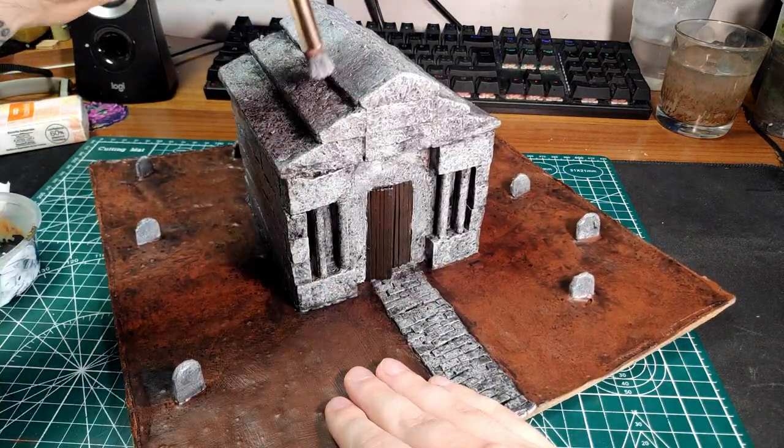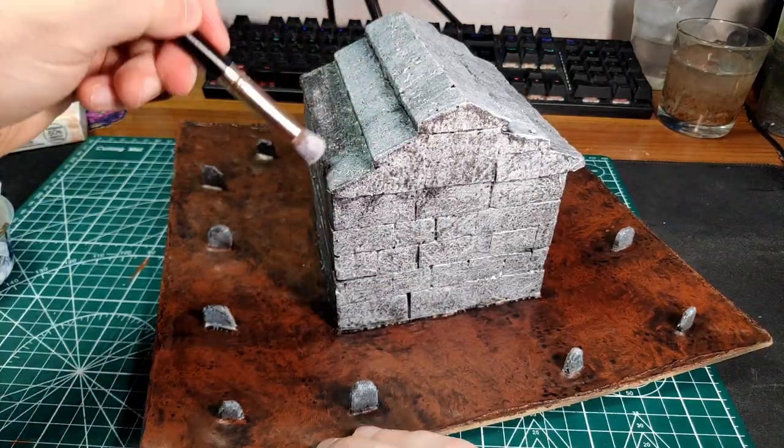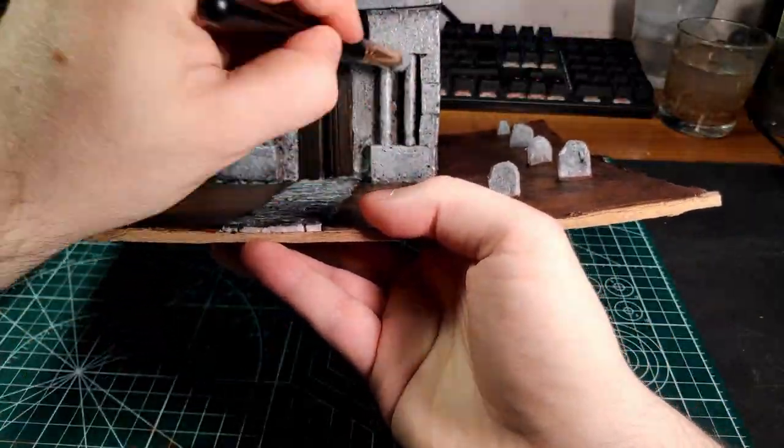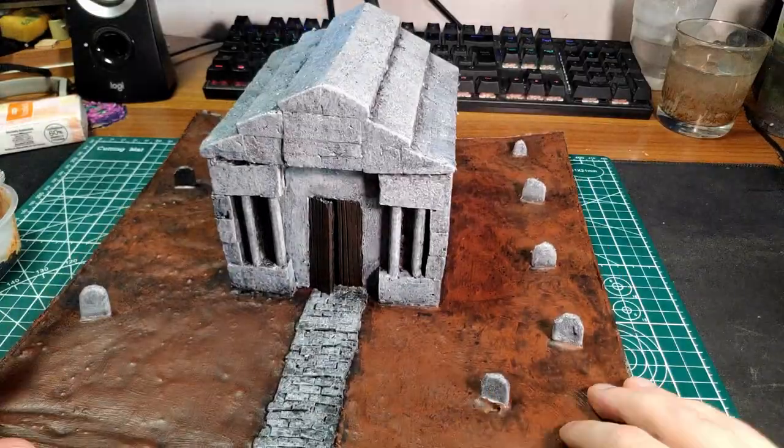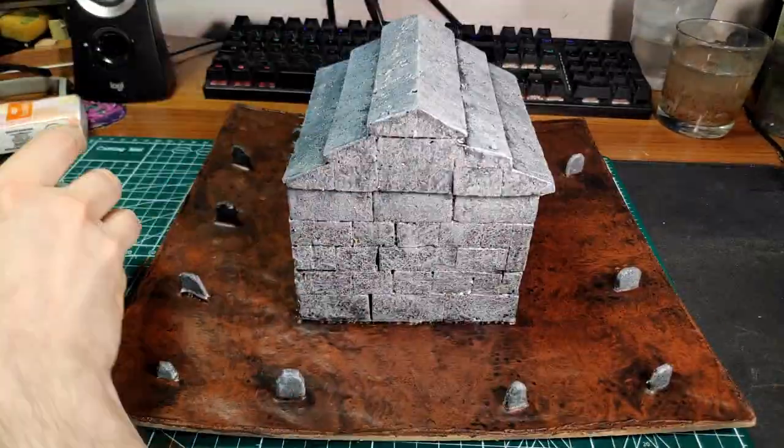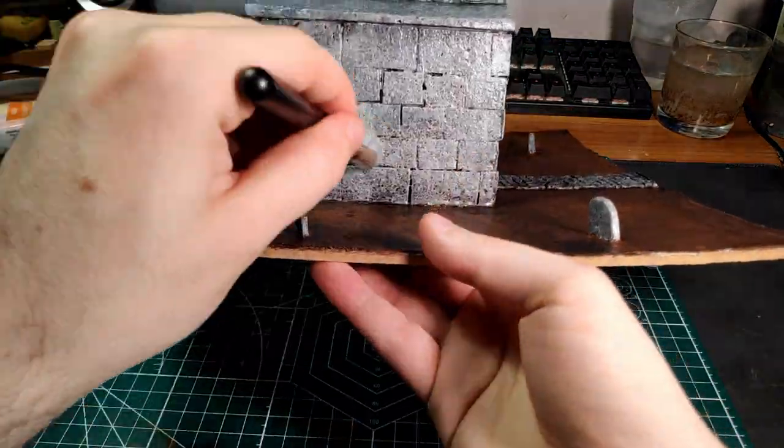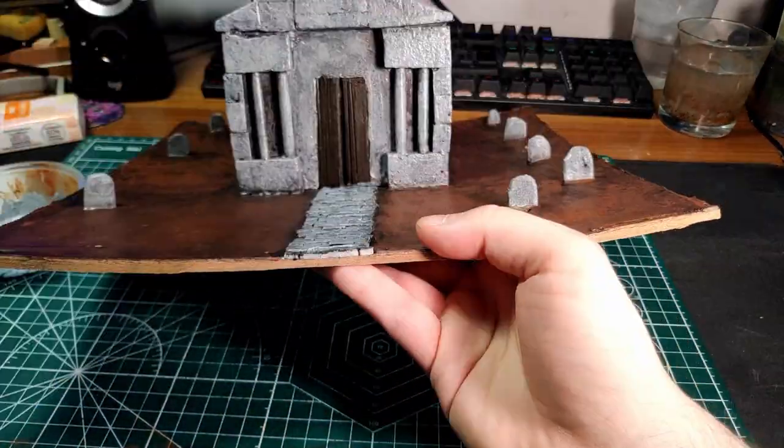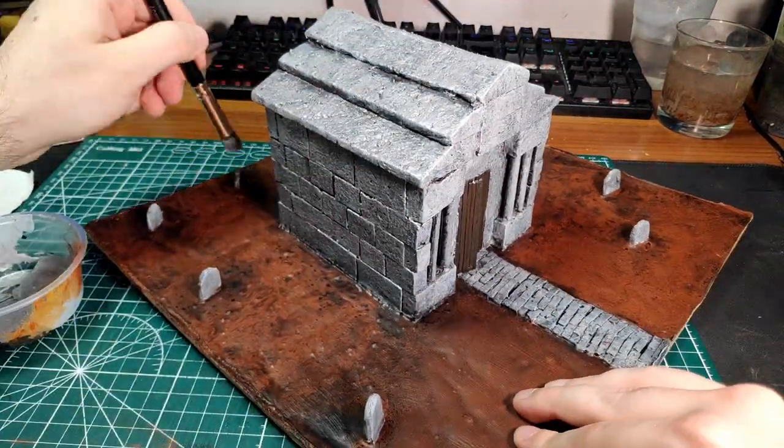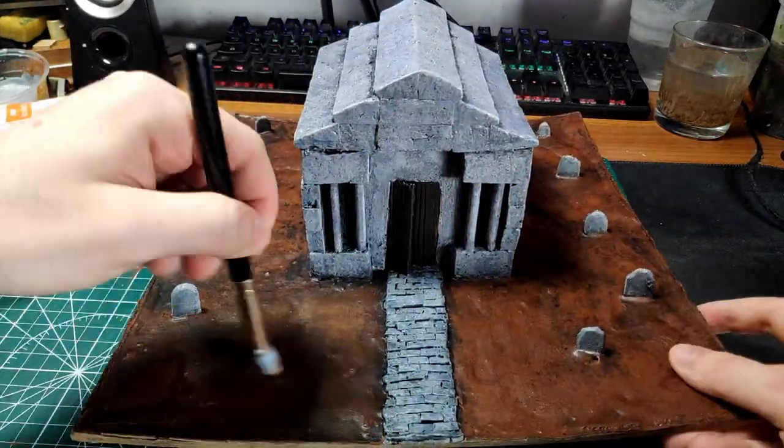Next, overbrush everything made with stone with the same light gray we used for the base coat, and the ground with a few layers of progressively lighter browns.